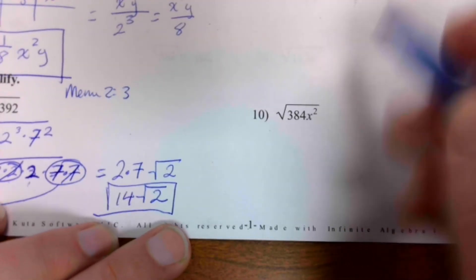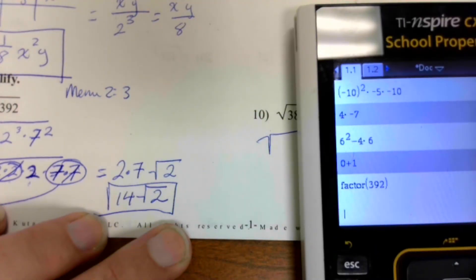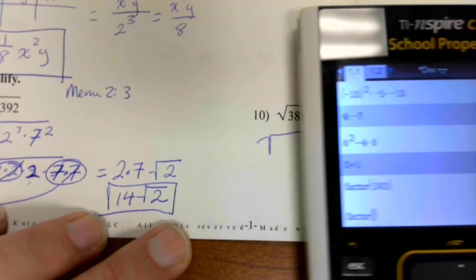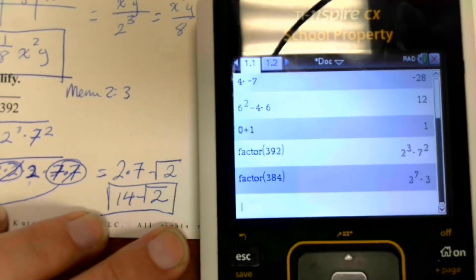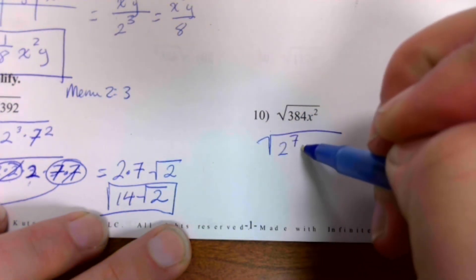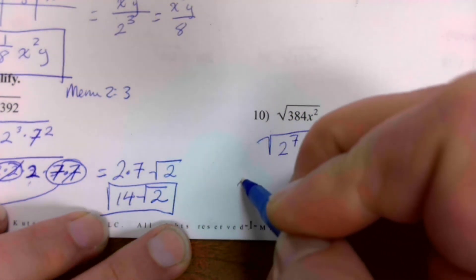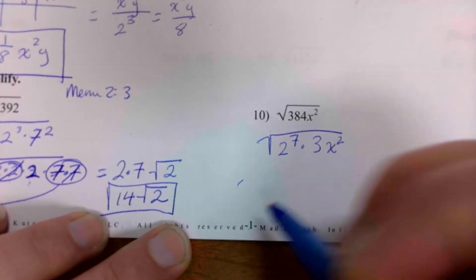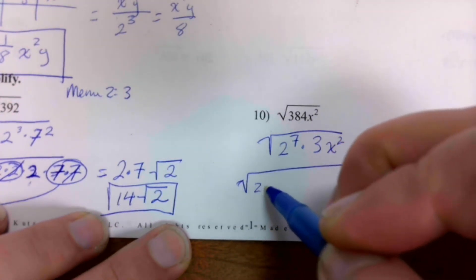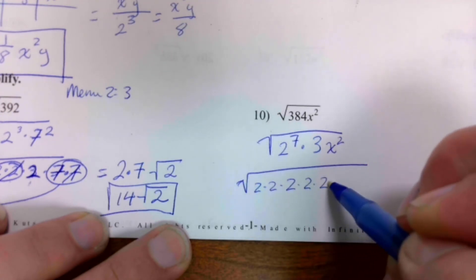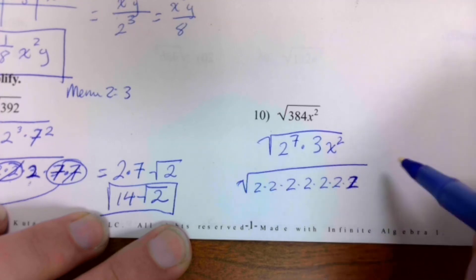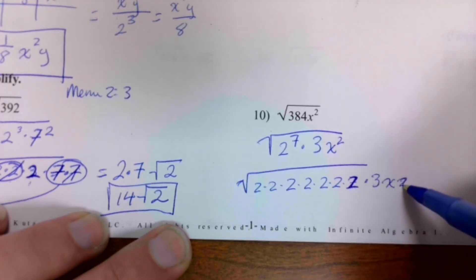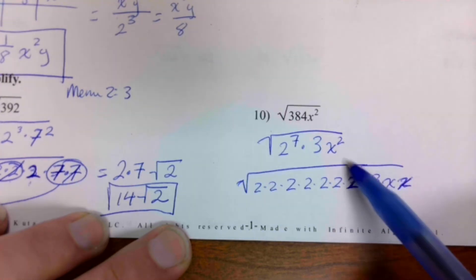I'm going to do the same thing here. Two to the seventh and three. And don't forget the x squared has to come too. One, two, three, four, five, six, seven. Seven is a two. Three and then two x's. I'm doing two x's because it was to the power two.